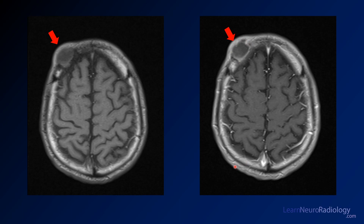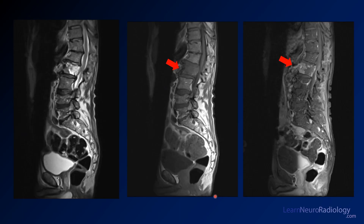In a patient of middle age or older you have to think about metastatic disease. Here you see the images from the lumbar spine, and there are some additional lesions. There is one at the L2 vertebral body — it's T2 bright, the posterior cortex is a little bit expanded, and there is enhancement that perhaps extends beyond the vertebral body. When you have lesions in an alternate location, you have to think about a systemic process like a malignancy or perhaps infection.